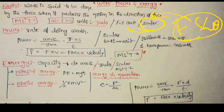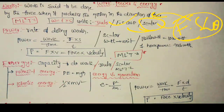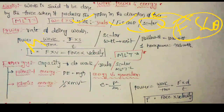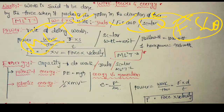Work unit: W is equal to F into S. The dimensional formula for work is ML² T⁻².